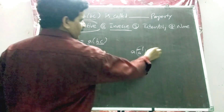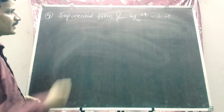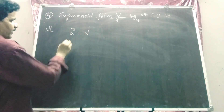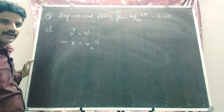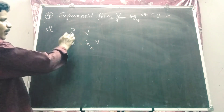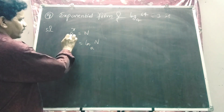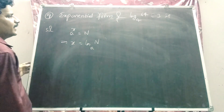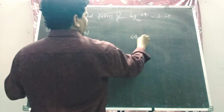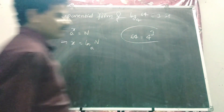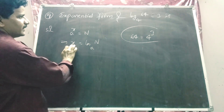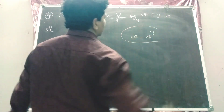Question 9: write the exponential form of log₄64 = 3. We know that if a^x = n, then x = log_a(n). Conversely, if x = log_a(n), then a^x = n — whatever the base is for the log becomes the base of the power. Therefore, log₄64 = 3 in exponential form is 4³ = 64. The base 4 becomes the base of the power, and the answer is 4³ = 64.